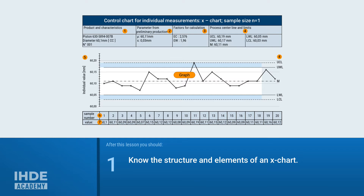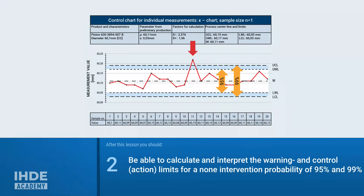By the end of this lesson, you should be familiar with the main elements of a control chart for individual measurements. You should also be able to calculate and interpret the warning and control limits for a given non-interference probability of 95 and 99%. Control limits are often also called action limits; however, we will use the term control limits.